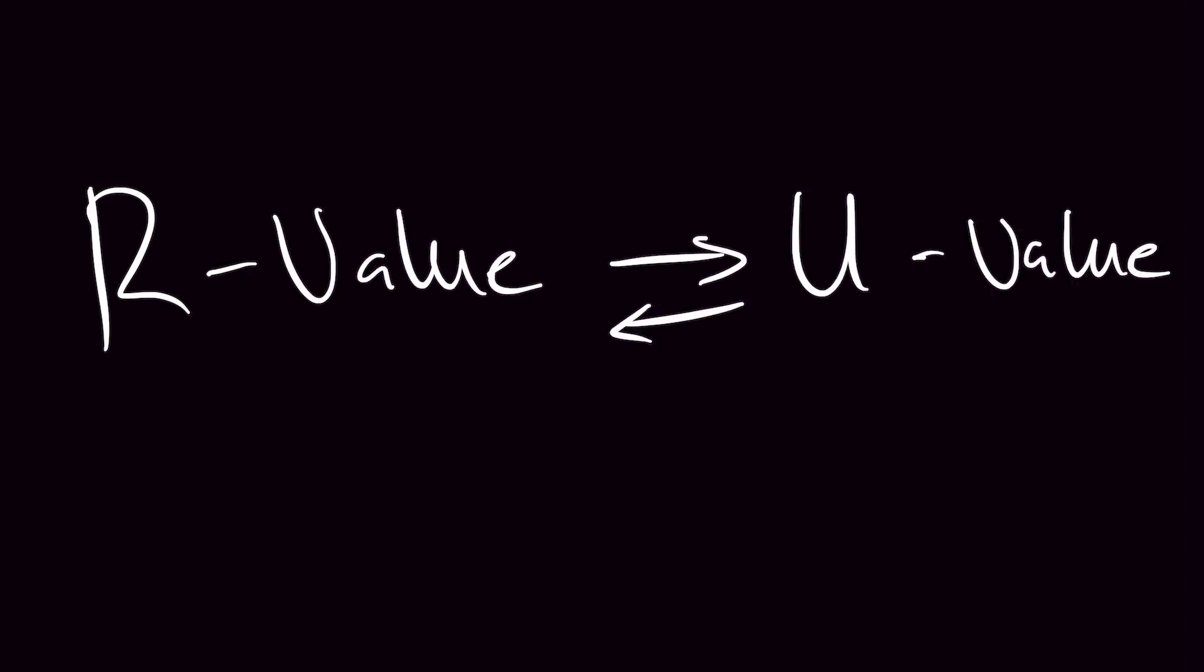U value is the inverse of the R value, so the calculation would be 1 divided by U or 1 divided by R. So if you have an R value of 4, you would end up with a U value of 0.25. This also works in reverse.